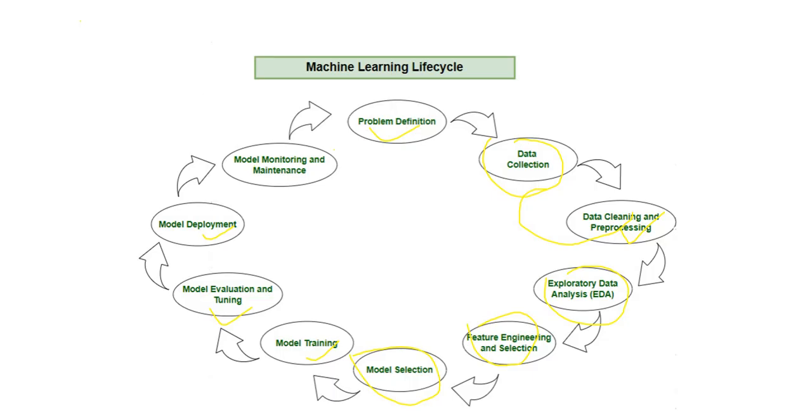Step number 10: model monitoring and maintenance. After deployment, we continuously monitor performance. Why? Because data changes, user behavior changes, market patterns change. We check for model drift, errors, and reduced accuracy, sometimes system failures. We retrain or update the model when we need it.